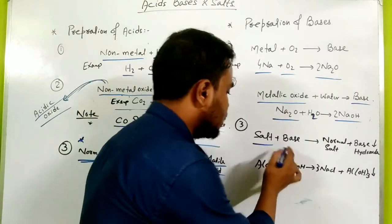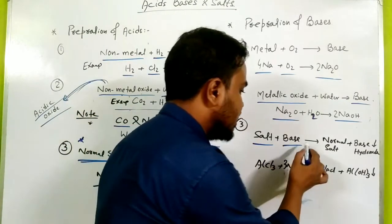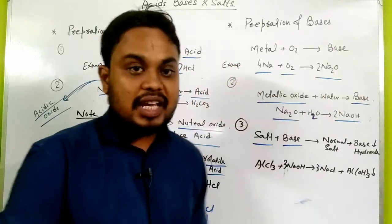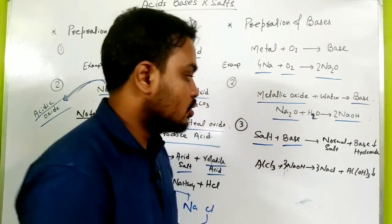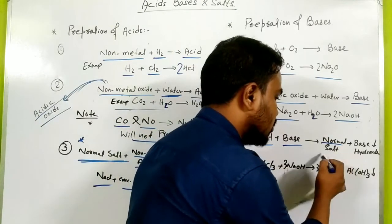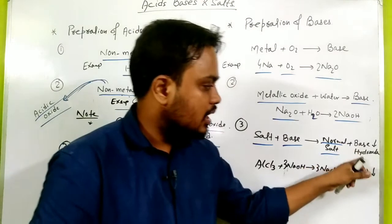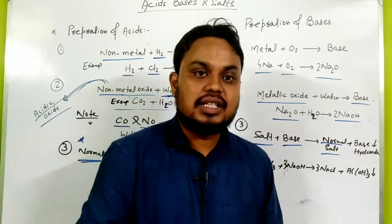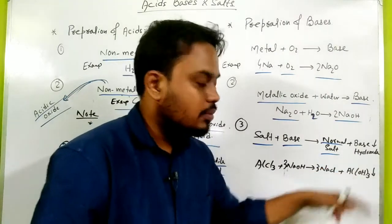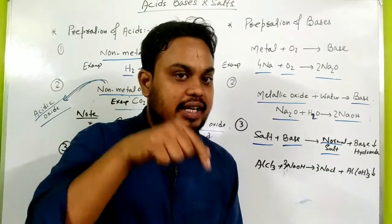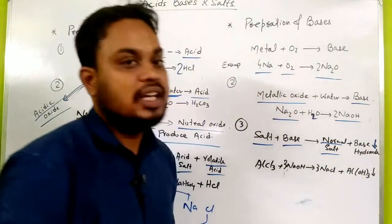Now for the preparation of base: take a normal salt and react it with a base. In base preparation, when salt reacts with a base, a normal salt is formed along with a base hydroxide, which is precipitated.